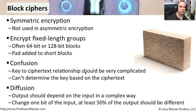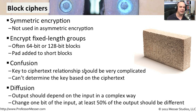Another concept is called diffusion. That means your output should be very different than your input. If you were to change just one letter of your input, your output should be dramatically different. You shouldn't have minor changes to the output when you make minor changes to the input. Diffusion means that at least 50% of the output changes if you change one thing in your input, ensuring the cipher text is as complex and difficult to figure out as possible.